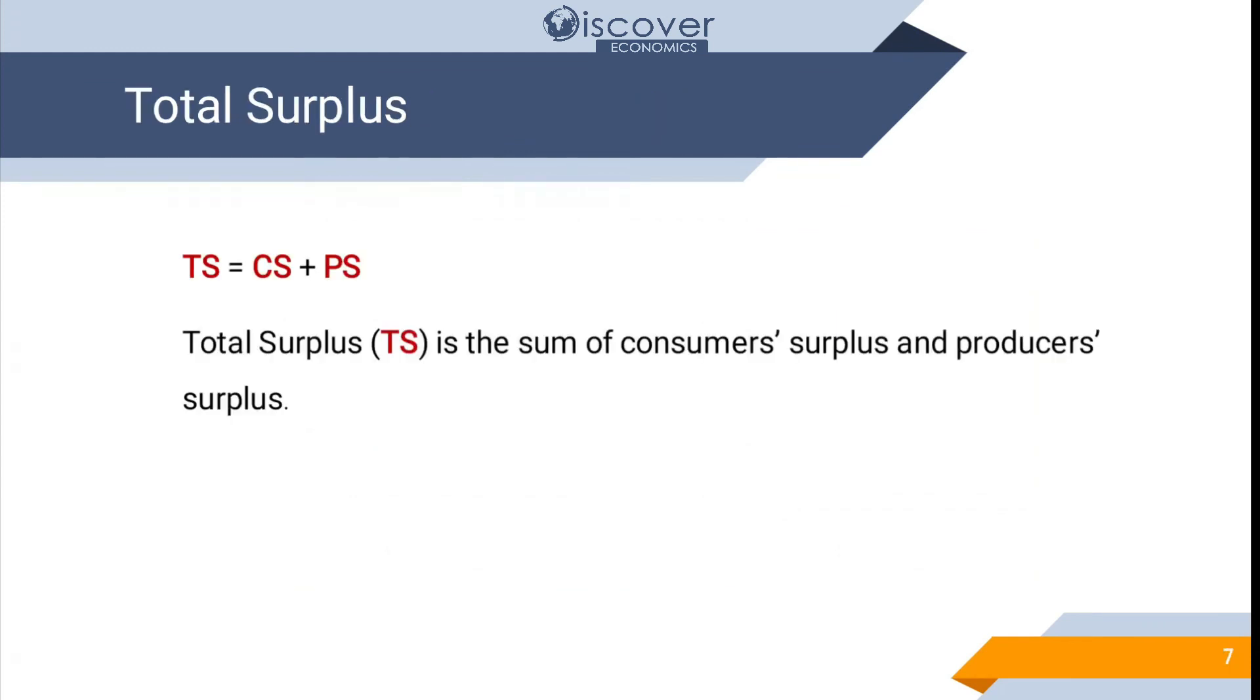Now total surplus is consumer surplus plus producer surplus. So consumer surplus is here 100 and producer surplus is again 100 as we have calculated before. So total surplus is going to be 200.